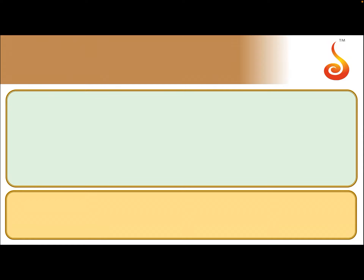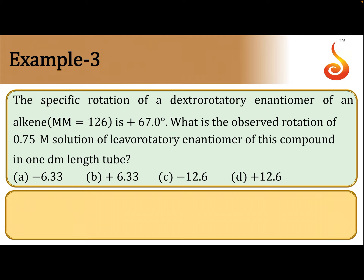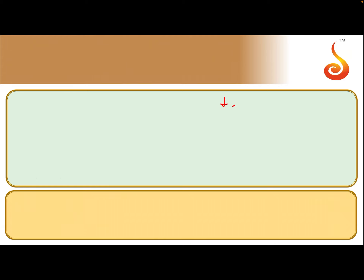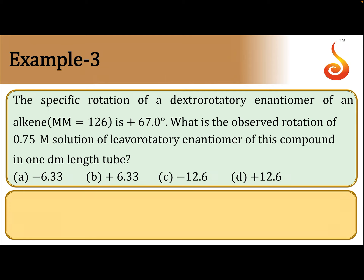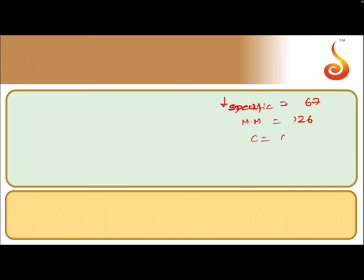What is the data given? Let us first write it. Alpha specific is given as 67. Molar mass is 126. Concentration is 0.75 molar.